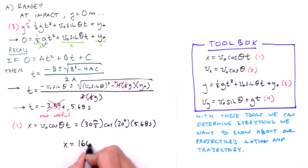We'll use equation 3 to determine this value, but we first need to obtain the time which corresponds to this moment. The moment our projectile crests its trajectory, the vertical component of its velocity is zero. Using this value along with equation 4, and solving for time, we get t equals negative v sub o sine theta divided by g. Inserting our values, we find that at 1.05 seconds our projectile levels out and begins its descent. Now we'll insert this time into equation 3, and we find that our projectile reaches a peak height of 105.4 meters — not very impressive, but very reasonable given our shallow launch angle.